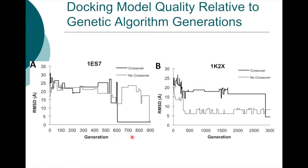Here are two examples. The X-axis is the generation of the genetic algorithm; the Y-axis is RMSD. In one example, RMSD started from about 30 Angstroms, and during iteration, the algorithm found a good solution that drastically reduced the RMSD value, which was maintained until the end of iterations. The figure shows details of how the genetic algorithm is computed.